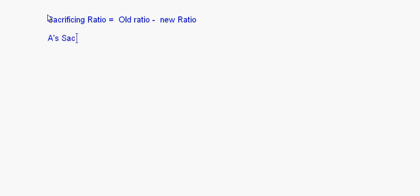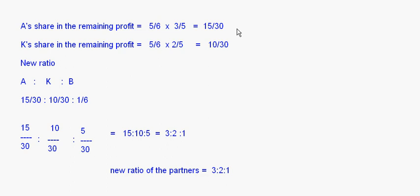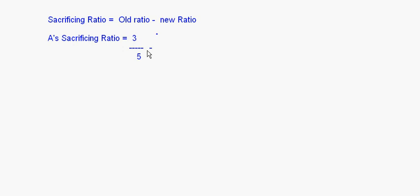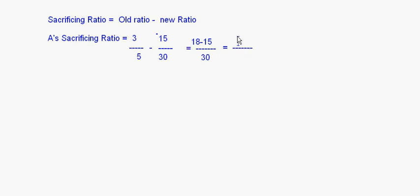To calculate A's sacrificing ratio: A's old ratio was 3/5. We take 3/5 minus his new ratio, which is 15/30. With denominator 30, that is 18/30 minus 15/30, which equals 3/30.